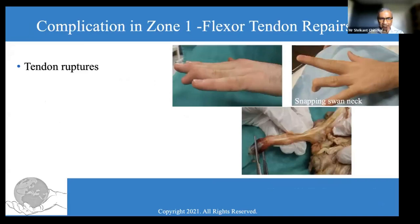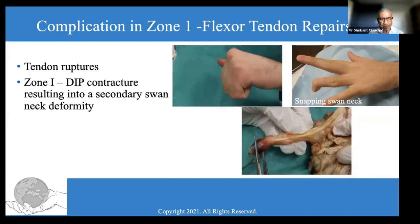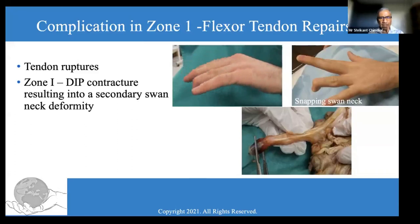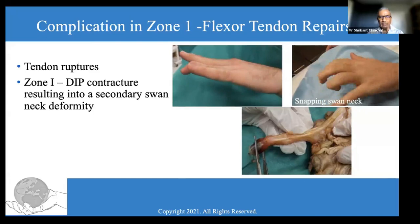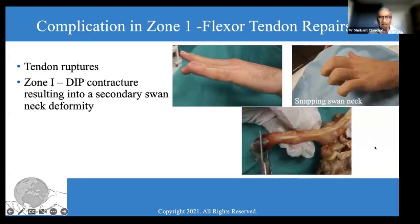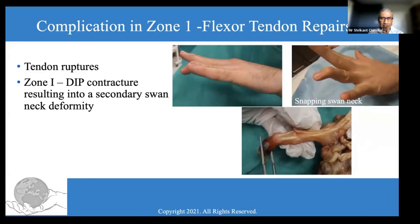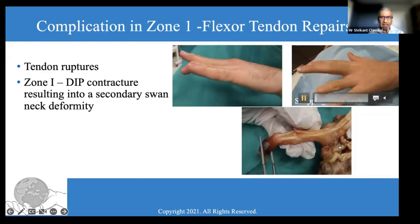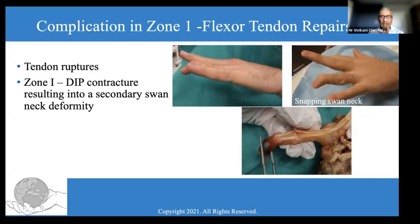DIP joint flexion contracture will ultimately result in a secondary swan neck deformity, as you see in this individual. This patient was offered corrective surgery but declined because of new employment. One month later, he came back with a snapping swan neck. The lateral bands had translated dorsal to the anatomical axis of rotation because the DIP joint was flexed, and at the PIP joint they became a tension band. This tension band effect is causing secondary swan neck associated with snapping, causing articular degeneration and pain and discomfort.